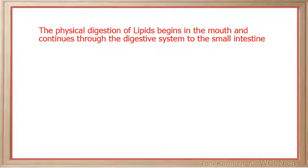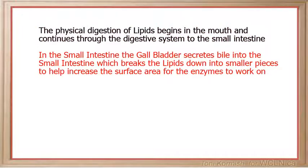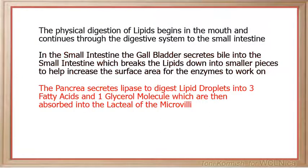To quickly recap: the physical digestion of lipids begins in the mouth and continues through the digestive system to the small intestine. When lipids reach the small intestine, the gallbladder secretes bile which breaks the lipids down into smaller pieces, increasing surface area for enzymes to work on. The pancreas then secretes lipase, which digests the fat droplets into three fatty acids and one glycerol molecule, which are absorbed into the lacteals of the microvilli.